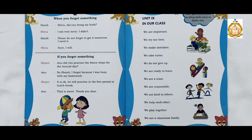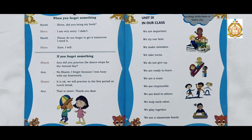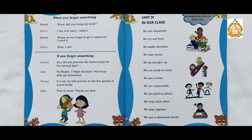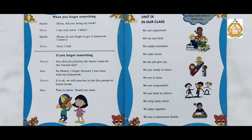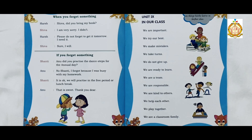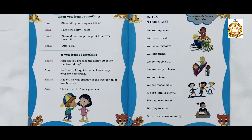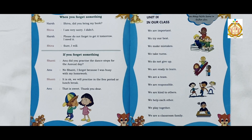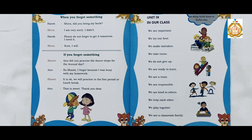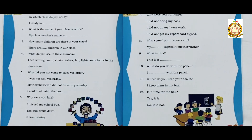Let's read some of the class manners that we follow in class. Please listen carefully and don't forget to repeat after the audio. We are important. We try our best. We make mistakes. We take turns. We do not give up. We are ready to learn. We are a team. We are responsible. We are kind to others. We help each other. We play together. We are a classroom family.